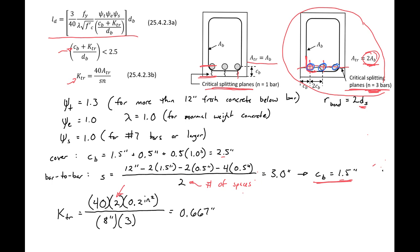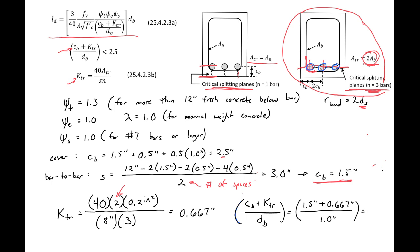We can now find our (CB + KTR) / dB term. This equals CB of 1.5 inches plus KTR of 0.667 inches, divided by dB of 1 inch, giving 2.167. Since 2.167 is less than the maximum of 2.5, we can use this value moving forward.